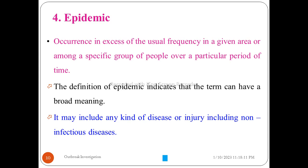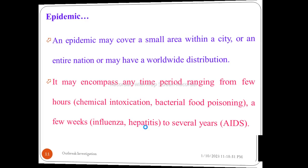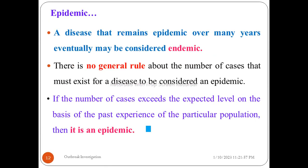Epidemic may encompass any time period ranging from a few hours to several years. Examples include chemical intoxication, food poisoning, HIV, influenza, and hepatitis. It covers a small area within a city, an entire nation, or worldwide distribution. A disease that remains epidemic over many years may eventually be considered endemic.